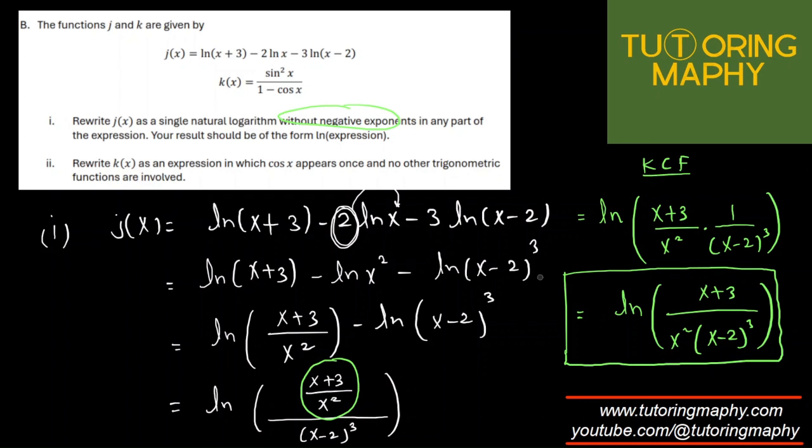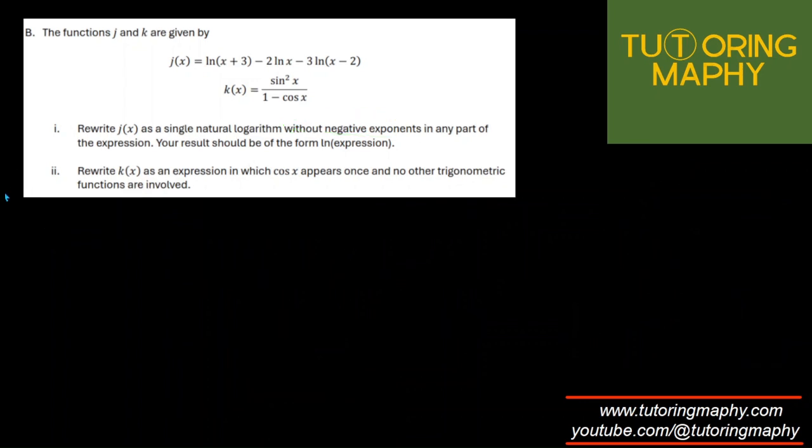Let's move on to the next page and try the next question. Part 2. They are saying that rewrite k(x) as an expression in which cos appears only once and no other trig function is involved. Okay. All right. So I know that sine can be easily converted into cos. In fact, not sine. Sine square to be more precise. It's courtesy Pythagorean identity.